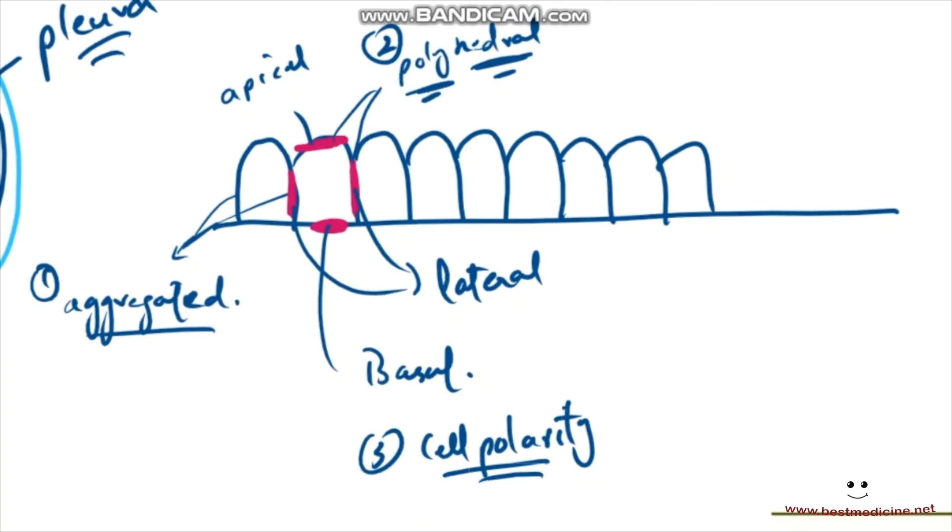And the fourth feature of epithelium, which is slightly difficult to understand, is that they have a low extracellular matrix. Extracellular matrix basically means the matrix that's outside the cell, the stuff that's outside the cell. You will get more idea about this in the next chapter, but I'll briefly explain. Extracellular matrix is the matrix that's present outside the cell. It's basically a jelly-like fluid, made up of something called ground substance and some protein fibers.